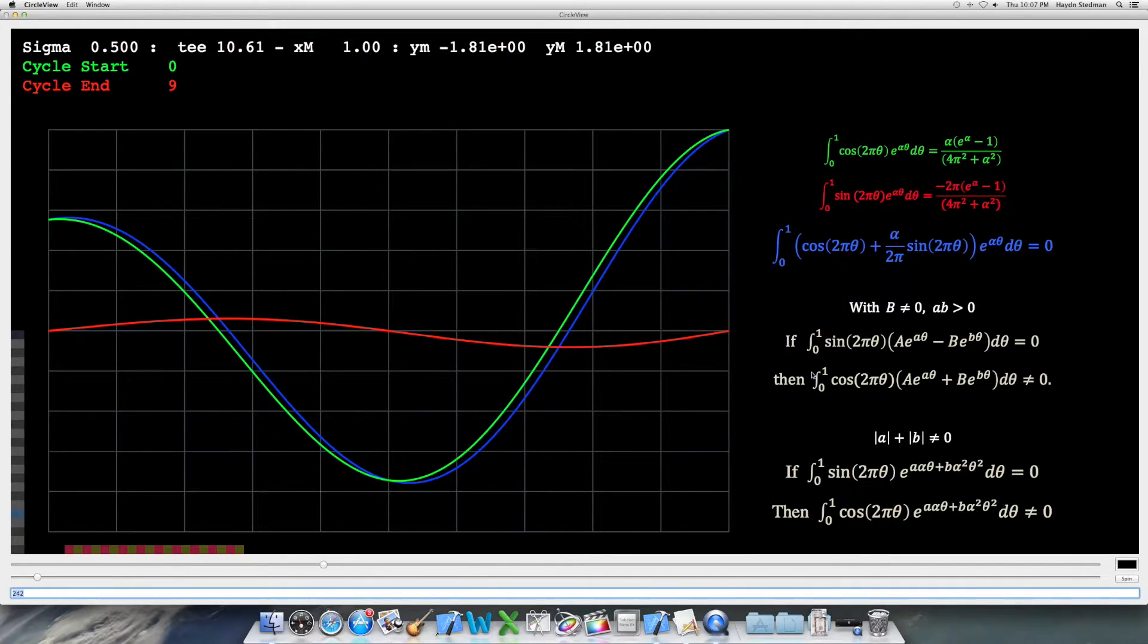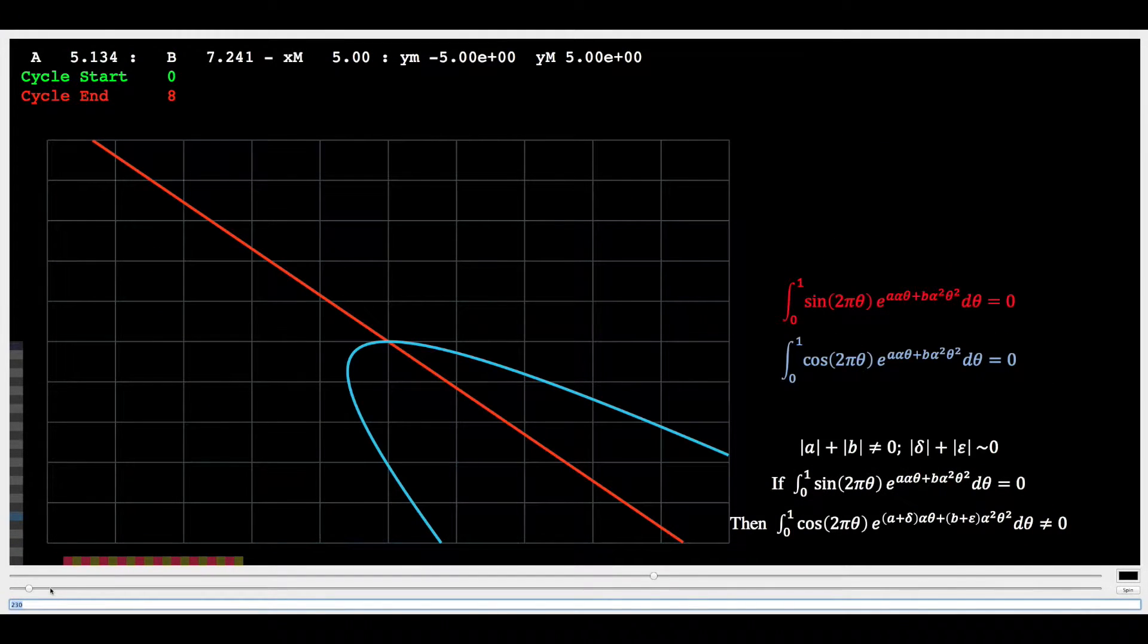The first trinket, our non-equality result. With A and the horizontal B on the vertical ranging from minus 5 to 5, we see the zeros of the two integrals specified. It is clear that every non-zero point on the red line has a neighbourhood which does not intersect the blue line.